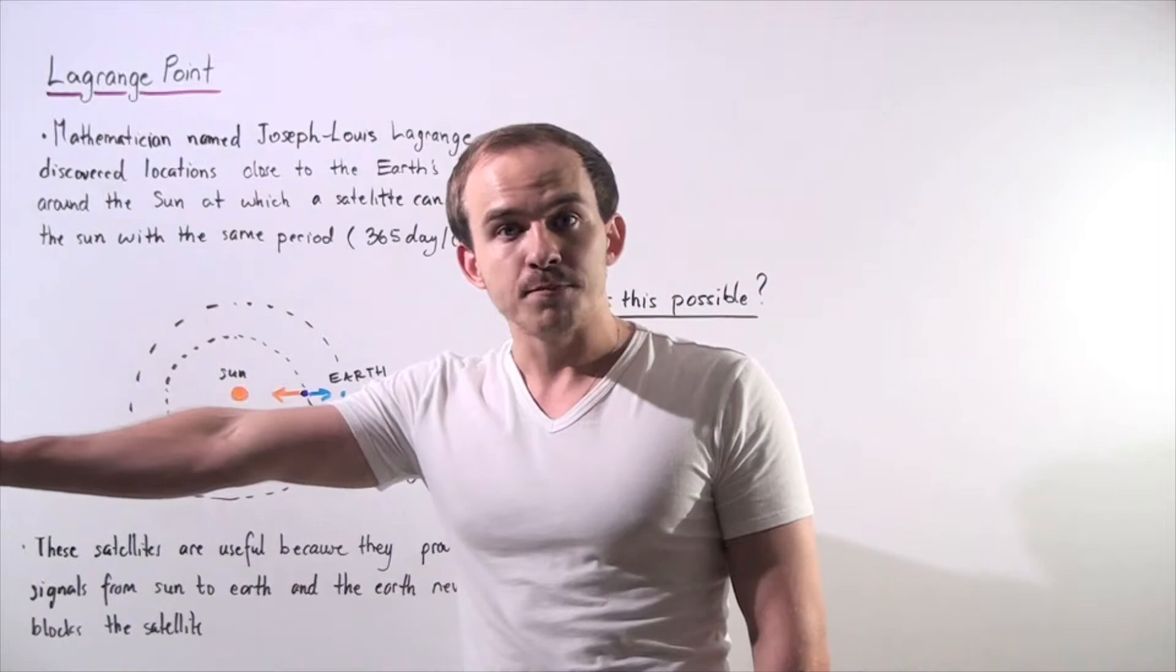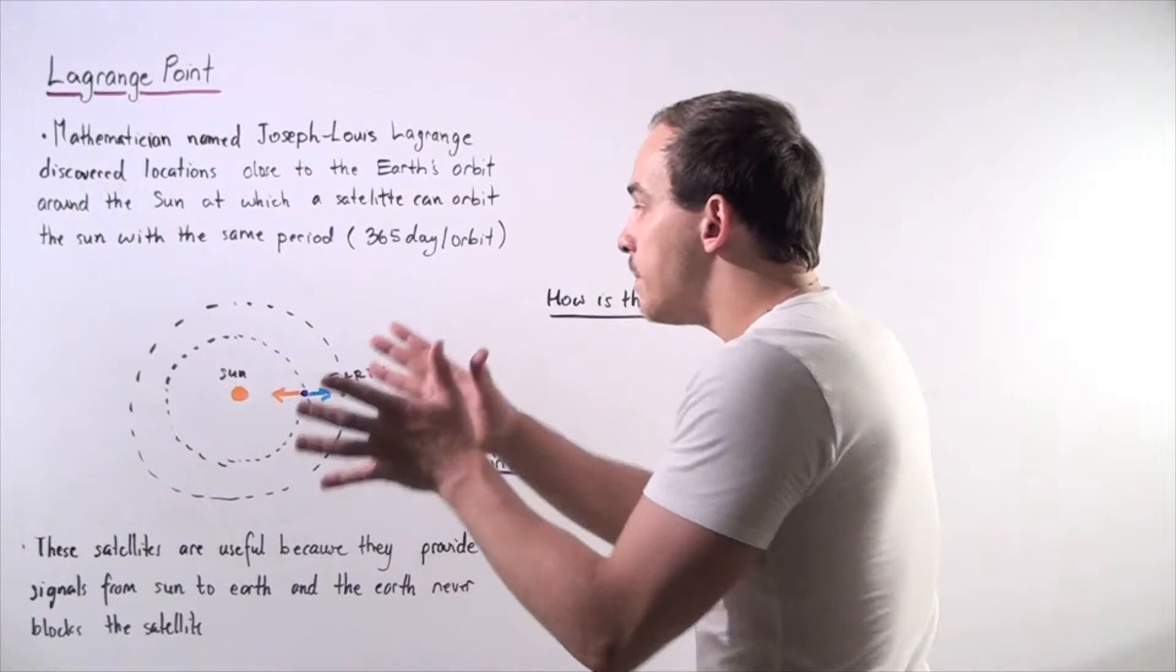And so this pull creates this orbit in which the period is exactly the same for both objects, our planet Earth and the satellite.